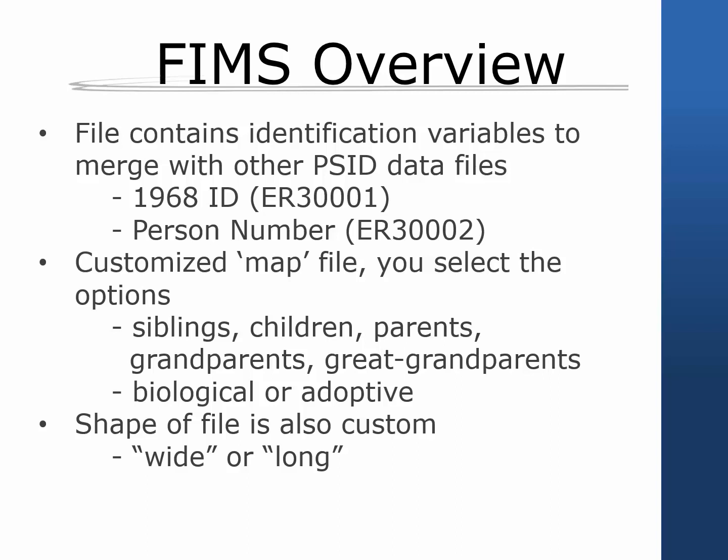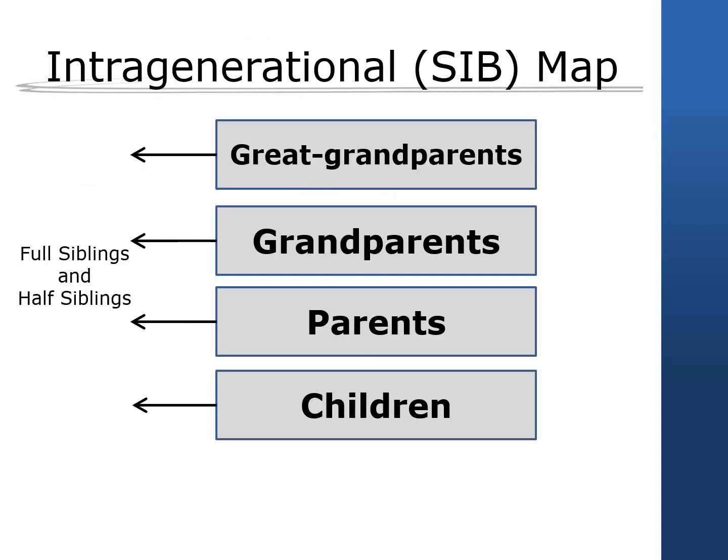You would then create an individual level data file and merge it with the FIMS file to match children and their corresponding grandparents. FIMS offers three distinct types of maps. The first is an intragenerational sibling map, which allows the identification of various types of siblings, both full siblings and half siblings.